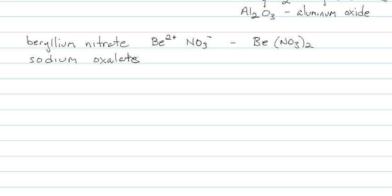Sodium oxalate — pause the video, figure out its formula, and then turn this back on. Sodium is +1. Oxalate is C2O4²⁻. So we have to double the sodium: Na2C2O4.